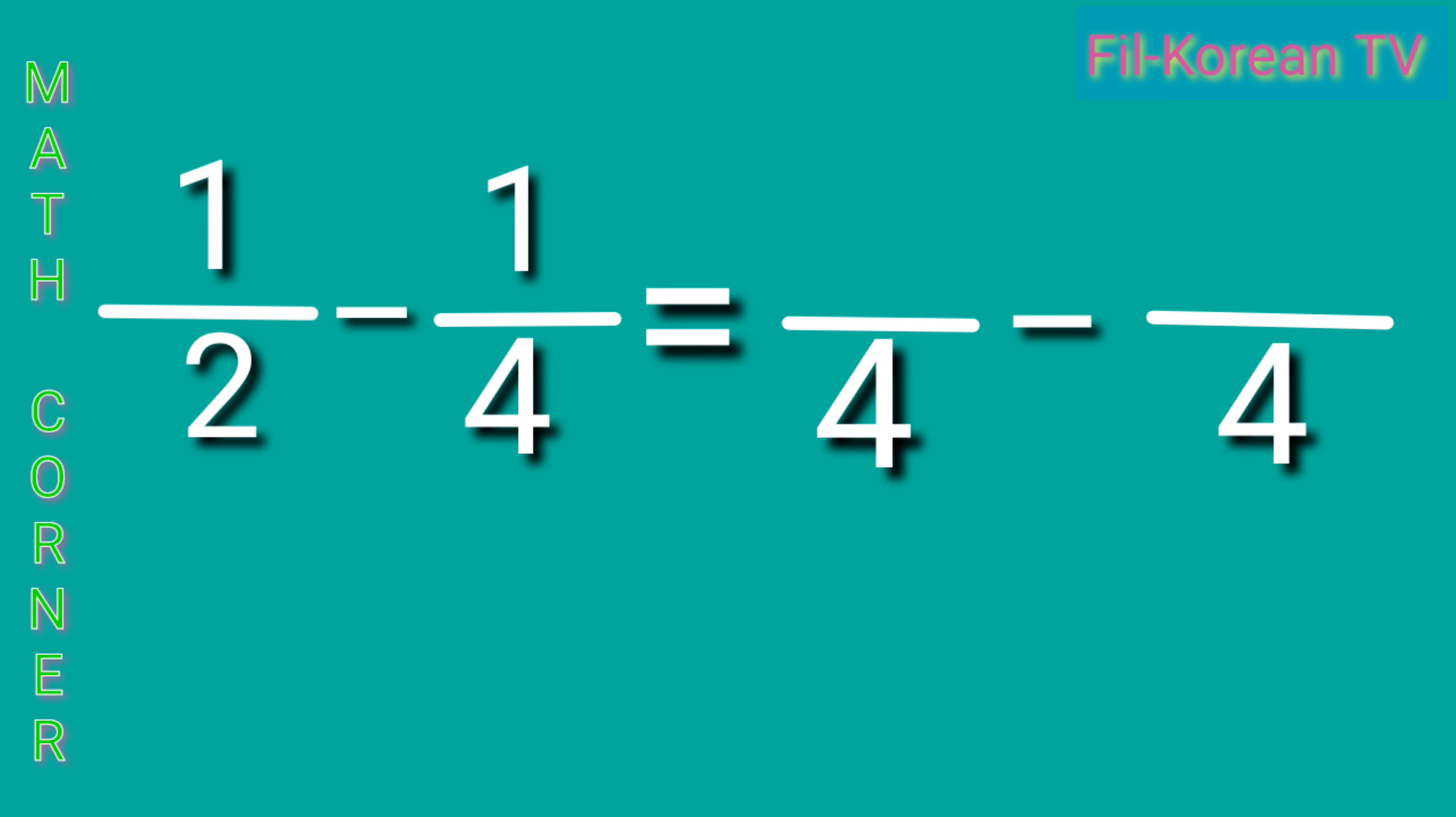4 divided by 2 equals 2 times 1 equals 2. The other one, 4 divided by 4 equals 1. 1 times 1 equals 1. Next, subtract the numerators and copy the LCD. 1 fourth is the answer. It is already in lowest term.